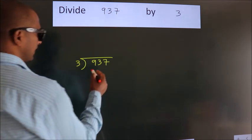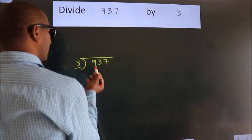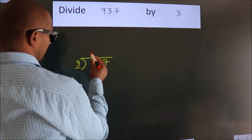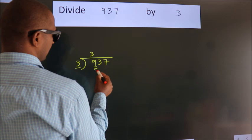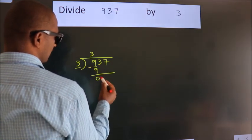Next. Here we have 9, here 3. When do we get 9 in 3 table? 3 times 3 is 9. Now we should subtract. We get 0.